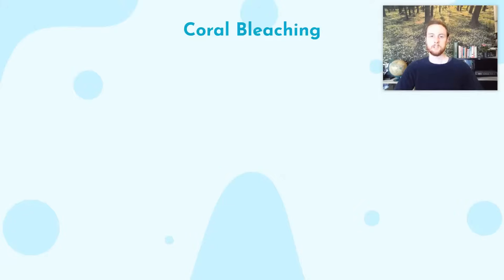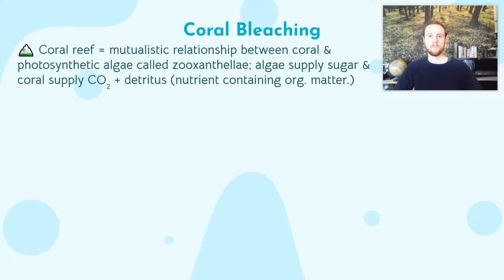We'll wrap up today by talking about coral bleaching. To understand bleaching, we need to remind ourselves of what a coral reef ecosystem actually is. It's characterized by a symbiotic, specifically mutualistic, relationship between coral — tiny animals whose individuals are called polyps — and a class of algae called zooxanthellae. Zooxanthellae are a class of algae that live in the cells of the coral, in their intercellular spaces.